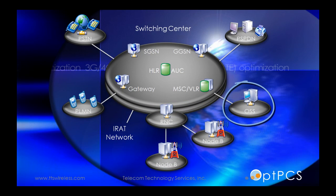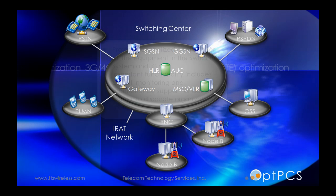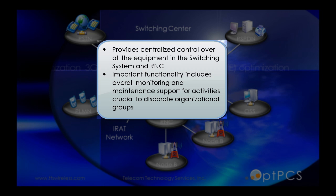Operation and Support System: This provides the centralized control over all the equipment in the switching system and RNC. Its important functionality includes overall monitoring and maintenance support for activities crucial to disparate organizational groups.